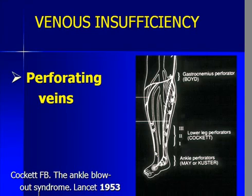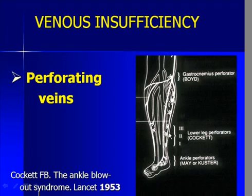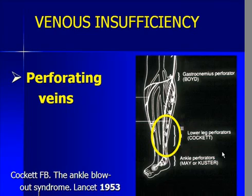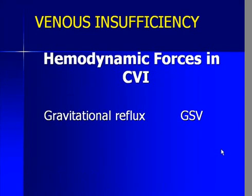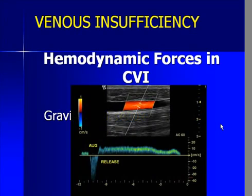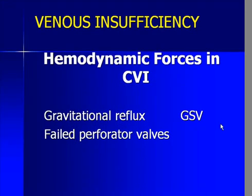Dr. Cockett started all this approximately 50 years ago when he wrote a paper very aptly titled 'The Ankle Blowout Syndrome,' because he was able to associate incompetent perforators and the jets of flow with calf muscle contraction impinging on the skin, basically causing a blowout-type syndrome which led to degradation of the skin and ultimate ulceration, particularly in this gaiter zone as shown here. The problem in chronic venous insufficiency in cases like this is a combination of the gravitational reflux we saw with primary varicose veins as well as failed perforator valves.